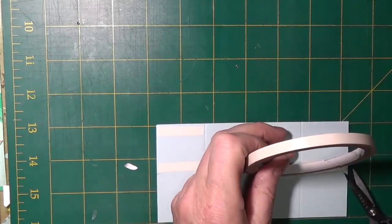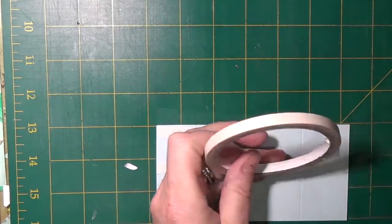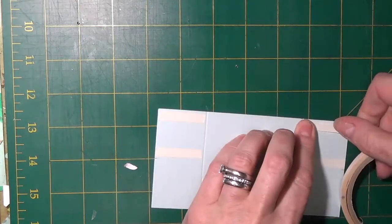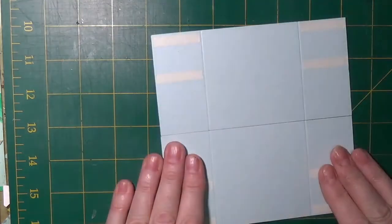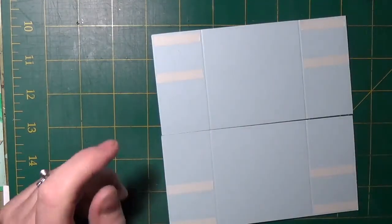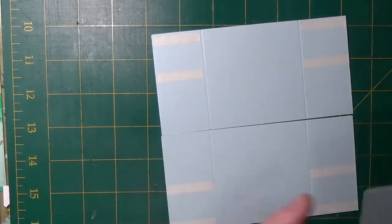The other two pieces you're going to set aside because you're going to adhere those to these two pieces. So when you have this done you lay them so that you have the tape on the top and the tape on the bottom.